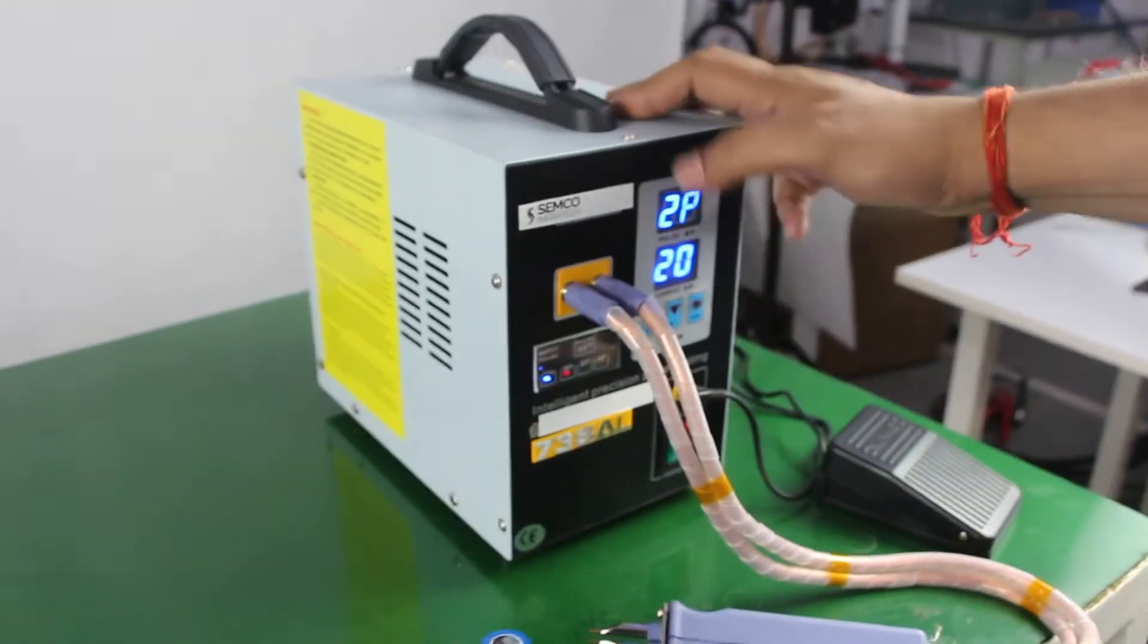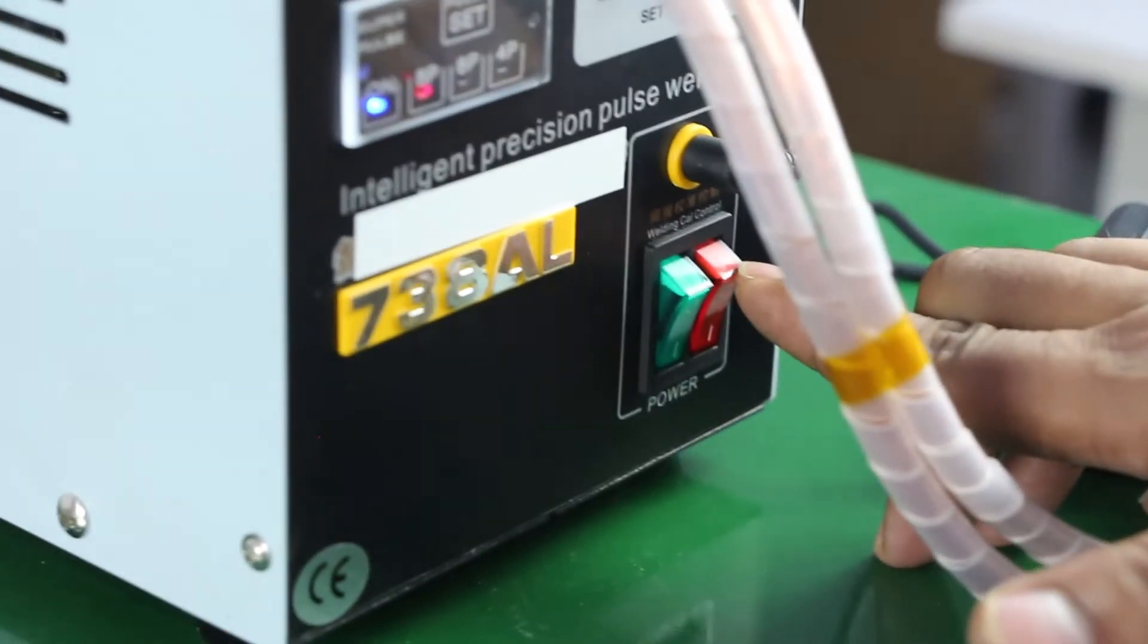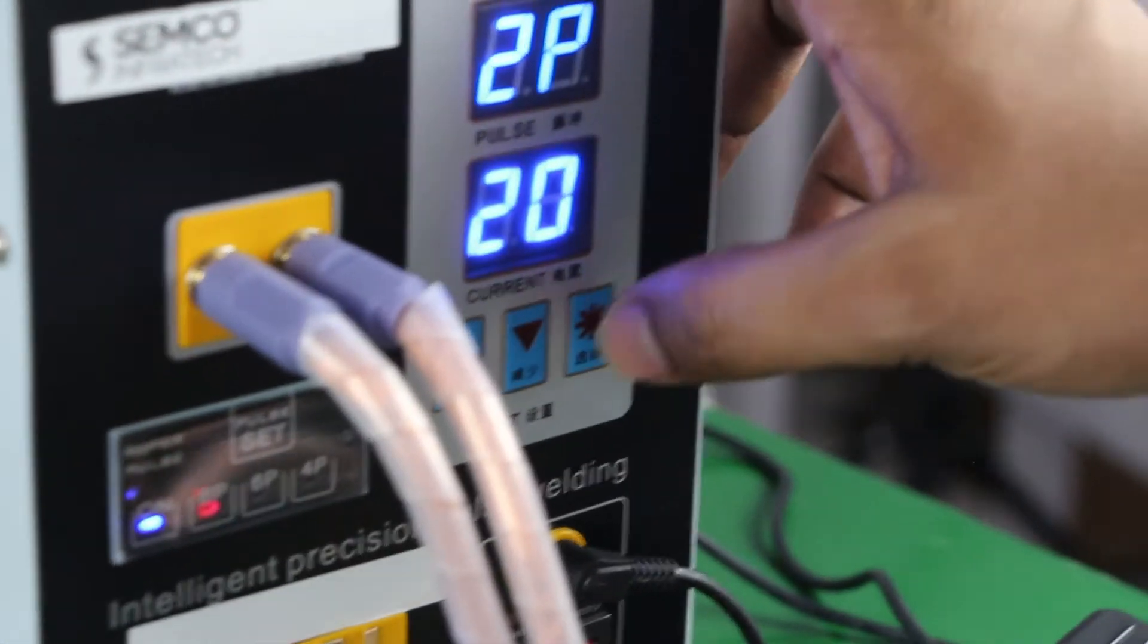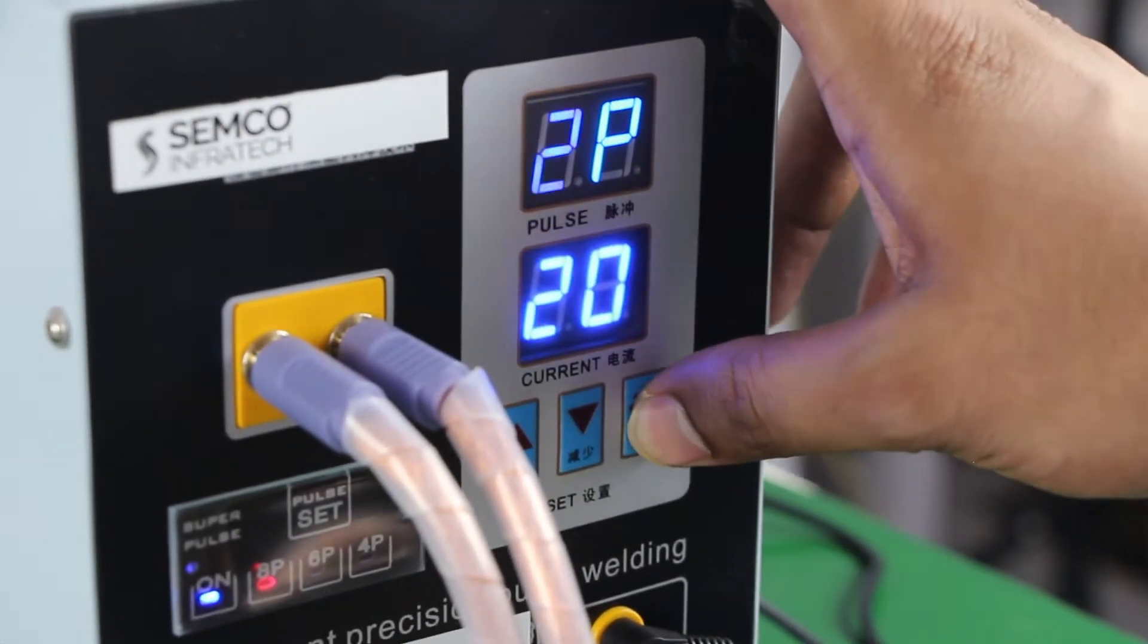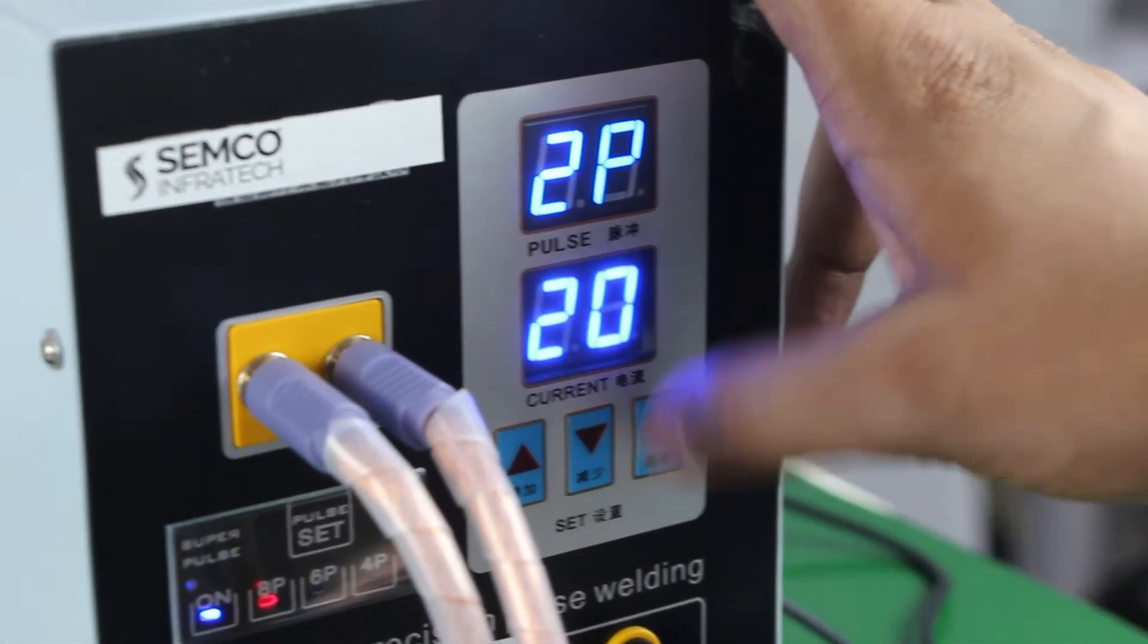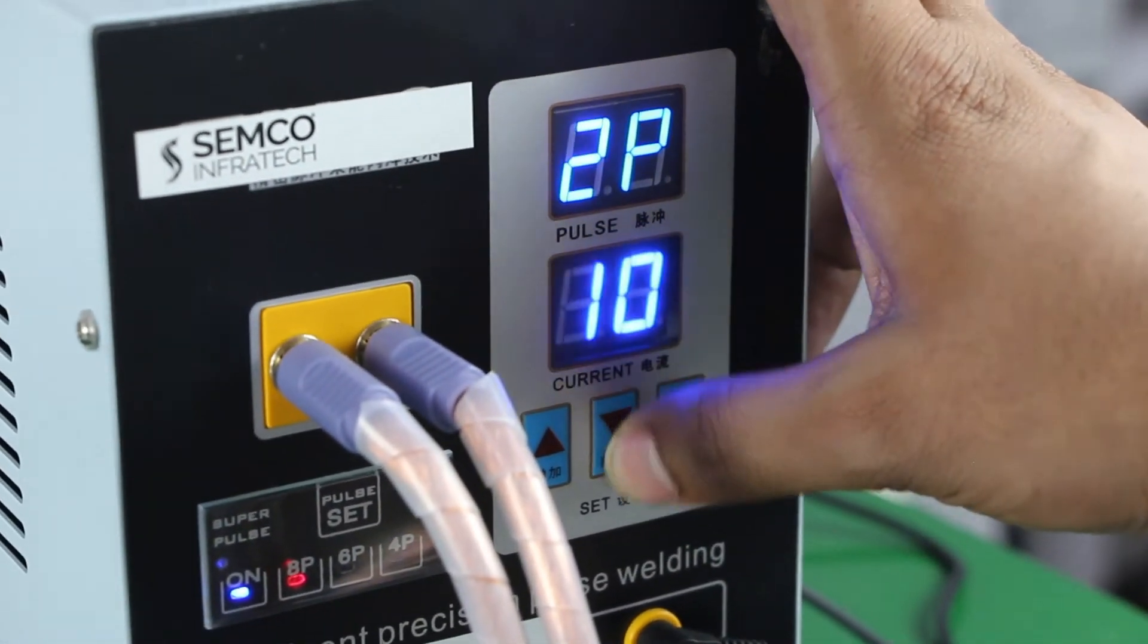Now let's come to the technical part. This switch is for the main power supply, and this switch is for turning our pulse on or off. This button we use for selecting, and this one for setting as per our requirement for current power percentage.